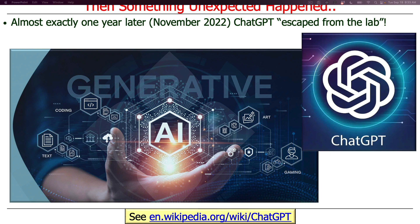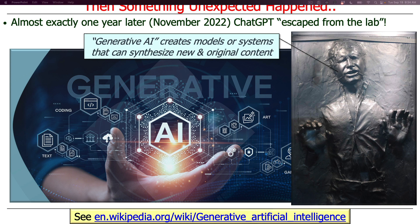What was fascinating is that we were looking 10 to 15 years down the road, and almost exactly a year later — November 2022 — ChatGPT escaped from the lab. There had been work going on for quite some time, but it came out in this time frame, enabling generative AI. Generative AI is essentially a way of creating models or systems that can synthesize what appears to be new and original content — which is an amalgamation of many things, but from the user's point of view it appears new, creative, and original.